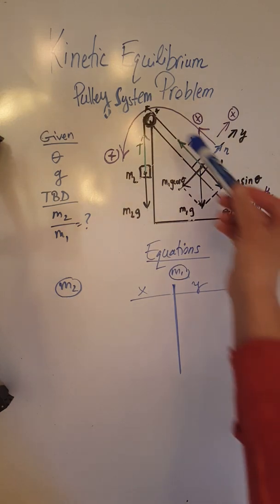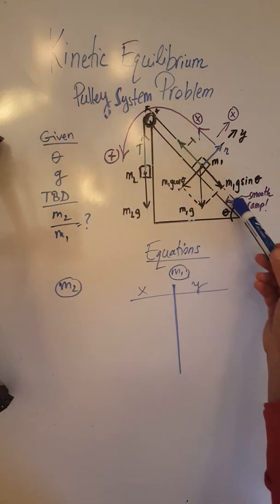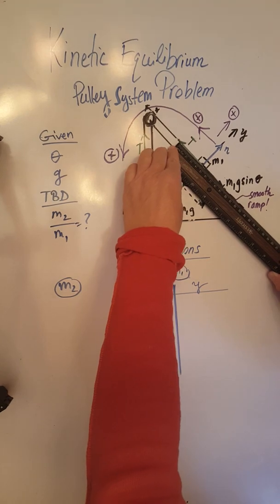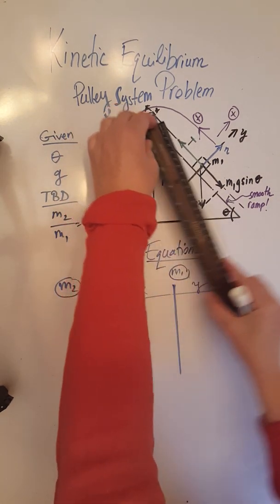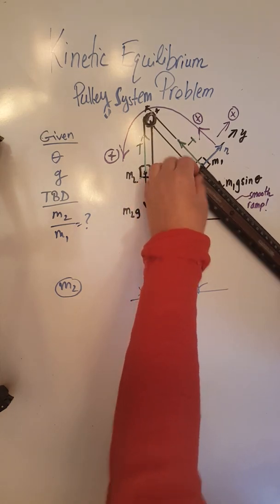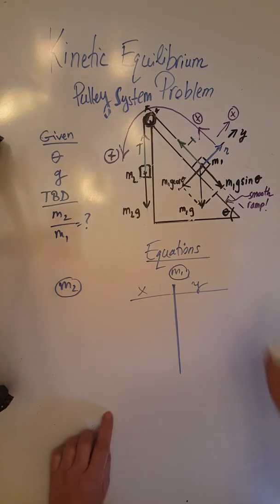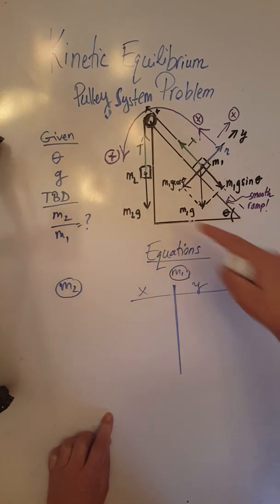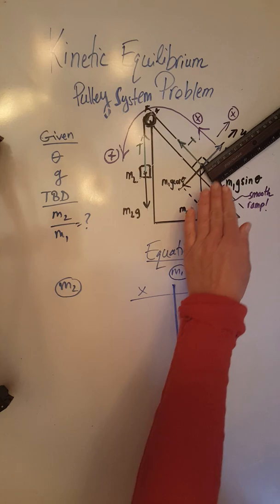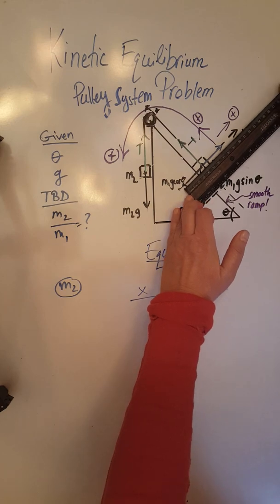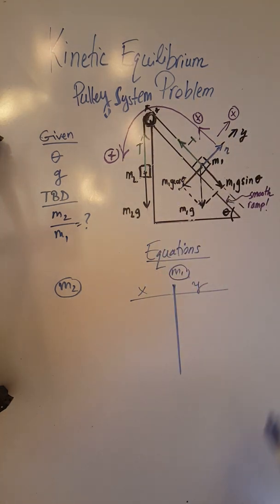For M1 we need to check the magnitudes along the ramp — parallel and perpendicular. Along the ramp we have T which is 5 centimeters, and we check that against M1g sine theta, which is also 5. So we are okay with the forces parallel to the plane. The forces perpendicular to the plane are the normal force, which is 4 centimeters, and M1g cosine theta, which is also 4. Those balance as well, so the magnitude check is complete.